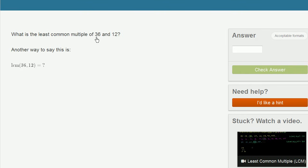What is the least common multiple of 36 and 12? So another way to say this is LCM in parentheses 36 and 12. And this is literally saying, what's the least common multiple of 36 and 12?